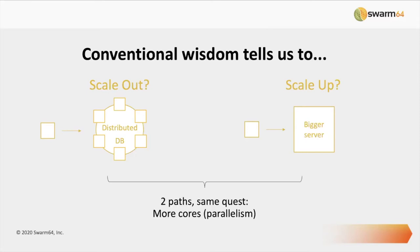When you step back and think about it, no matter which path you take, people are generally on the same quest: they are after more parallelism — more cores. Whether you go from a machine with eight cores to a single machine with 48, or to a cluster of six machines to get your 48 cores, you're really trying to get more parallelism — like opening more checkout lines at a busy grocery store to get more requests satisfied.